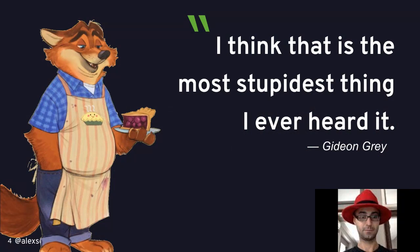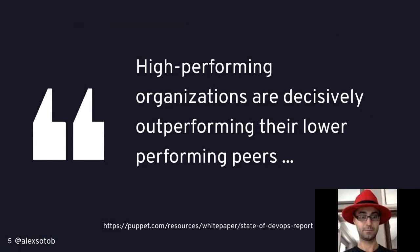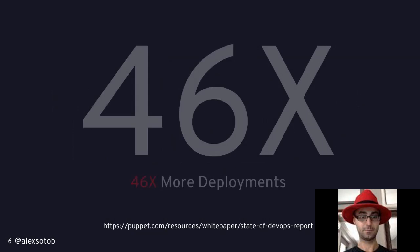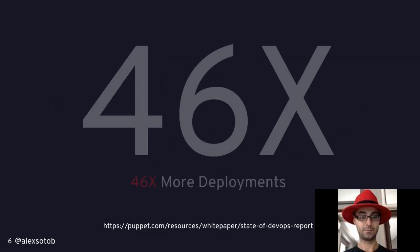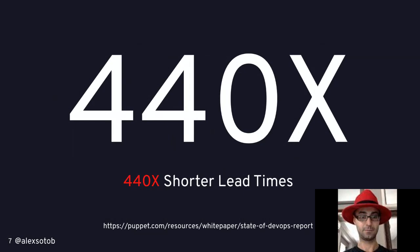This presentation is about testing in DevOps. One great resource is the Puppet State of DevOps white paper, published every year. One really interesting quote is that high-performing organizations are decisively outperforming their lower-performing peers. If you adopt DevOps, you'll be able to outperform your competitors. For example, you'll be able to do 46 more deployments, meaning you can hit the market 46 more times than them. You'll also have 440 times shorter lead times.